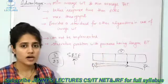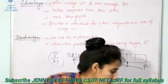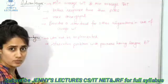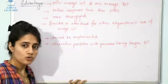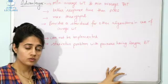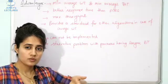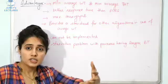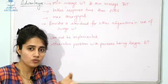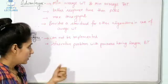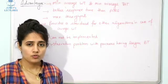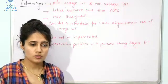The second disadvantage is the starvation problem with processes having larger burst time. In a previous video, the difference between convoy effect and starvation was discussed. Starvation is when a process waits for an indefinite amount of time because the CPU is biased towards other processes — based on priority or another criterion.